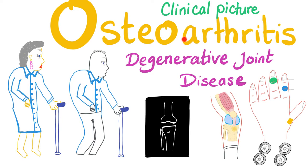This is my fourth video on osteoarthritis and the 39th video in my rheumatology playlist. Today we'll talk about the clinical picture of this degenerative joint disease. We have Heberden and Bouchard nodes on your DIP and PIP respectively. The most commonly affected joint in the hand in osteoarthritis is the first CMC joint, or carpometacarpal.